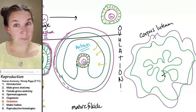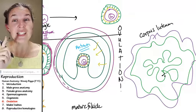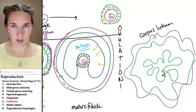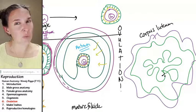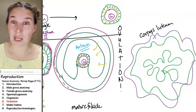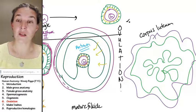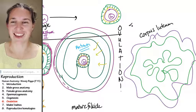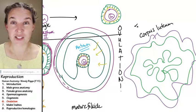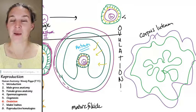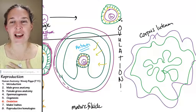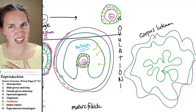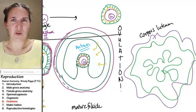The corpus luteum is a player. It's going to continue to produce hormones that will keep the baby alive should we make one. Now what we have to do is go find out what happens to this egg, this secondary oocyte that has now been exploded out.